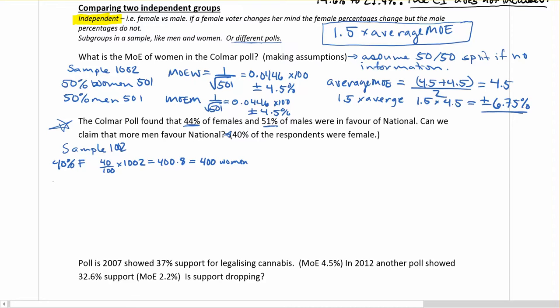So if we have 40% females, we're going to assume then that we would get 60% males. So let's find out how many males there are. 60 divided by 100 times 1002 is going to get us 601.2. And we'll round that to roughly 601 men.